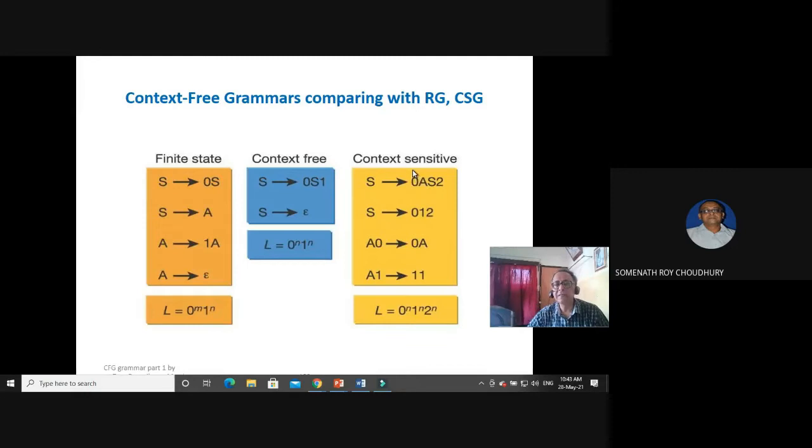And this is context sensitive. With these rules, you can go to a to the power n, b to the power n, c to the power n. These rules you can remember. One funny rule is this a0 and 0a, so that we can change it. These are the rules you apply, you can get this.